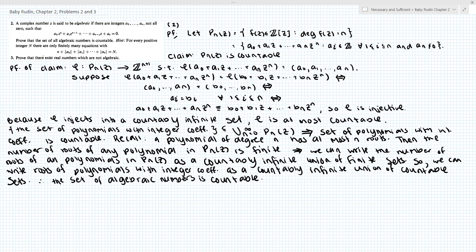Now question 3 is asking us to prove that there exist real numbers which are not algebraic. So once we've proven 2, 3 is quite quick. Recall, R is uncountable.